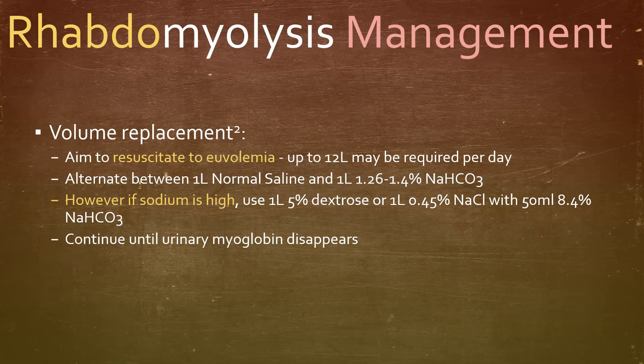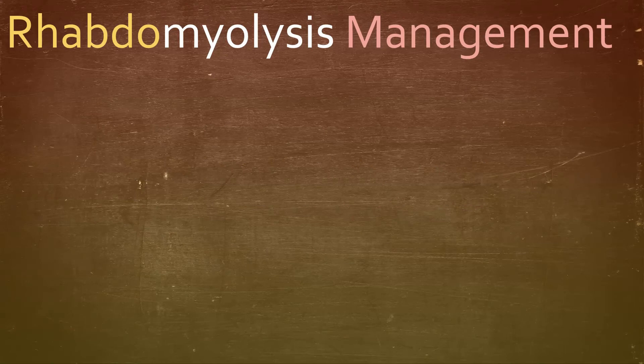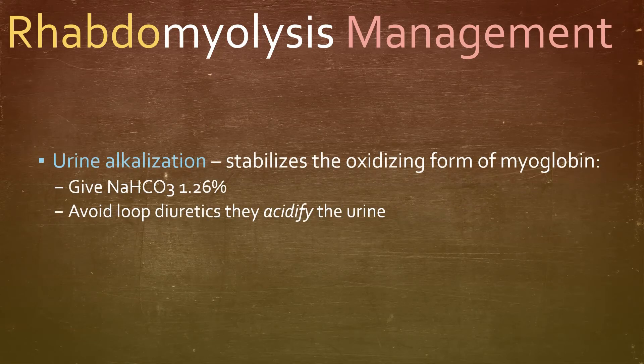We continue this until the urinary myoglobin disappears. We can also alkalinize the urine — essentially this stabilizes the oxidizing form of myoglobin — and we carry this out by using sodium bicarbonate.